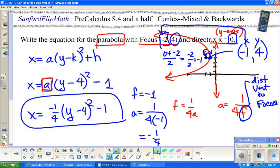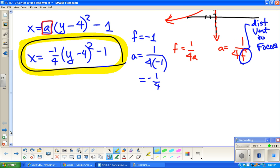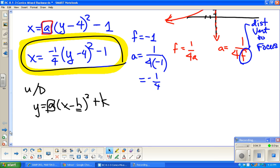So x equals negative 1 fourth y minus 4 squared minus 1. And that is it for that one. Just a reminder that if the parabola would have opened up or down, then y equals a x minus h squared plus k. The a is still 1 over 4f. This will be the x value for the vertex, and k would be the y value for the vertex. That's a parabola example.